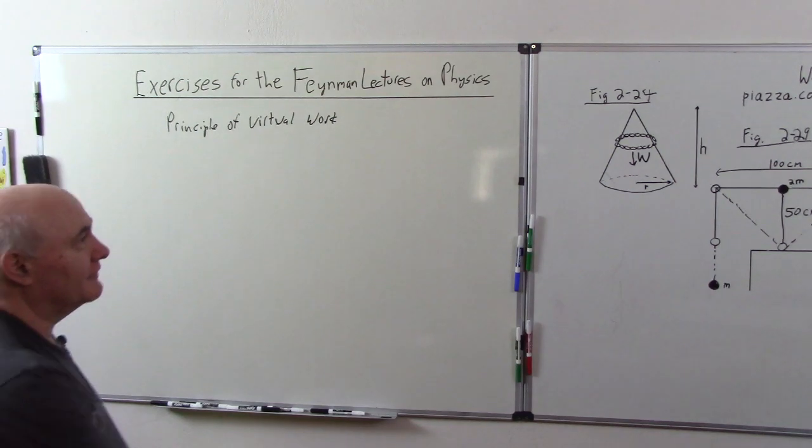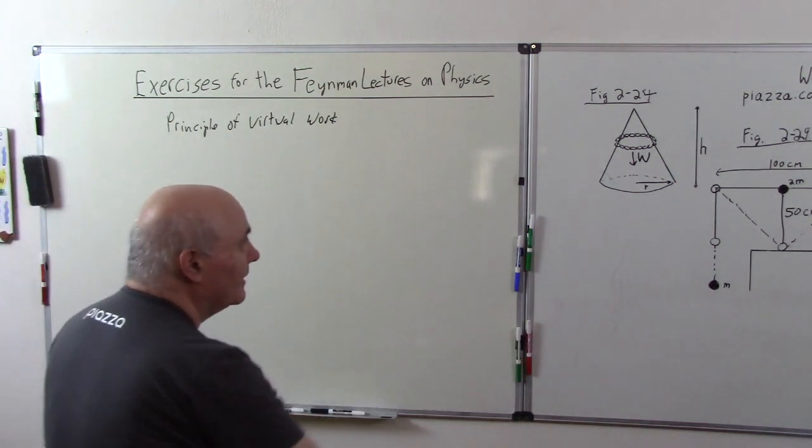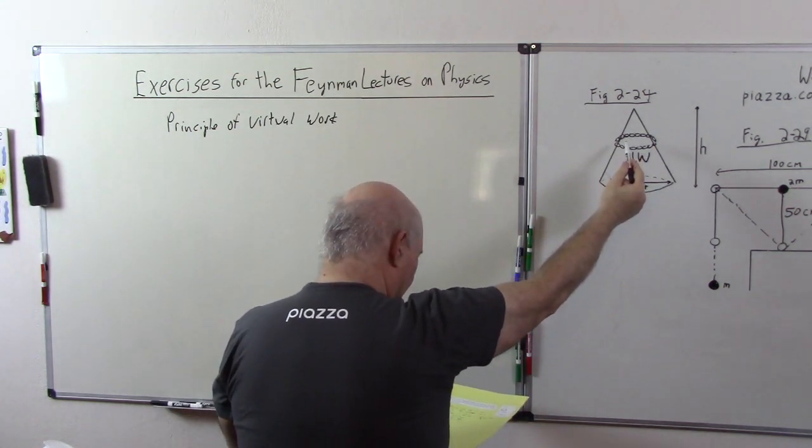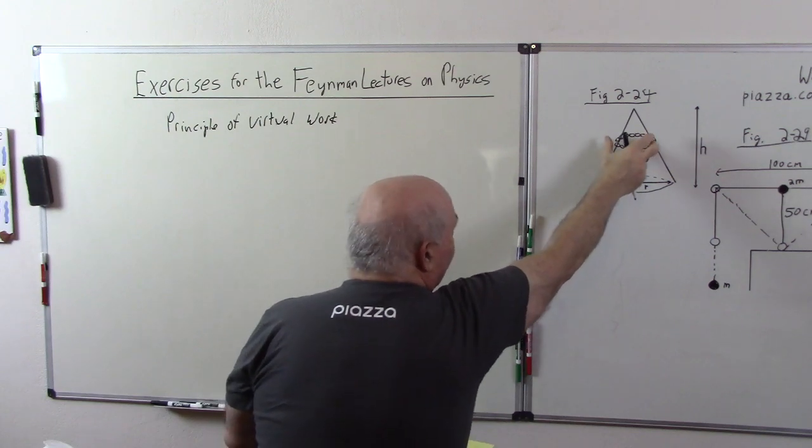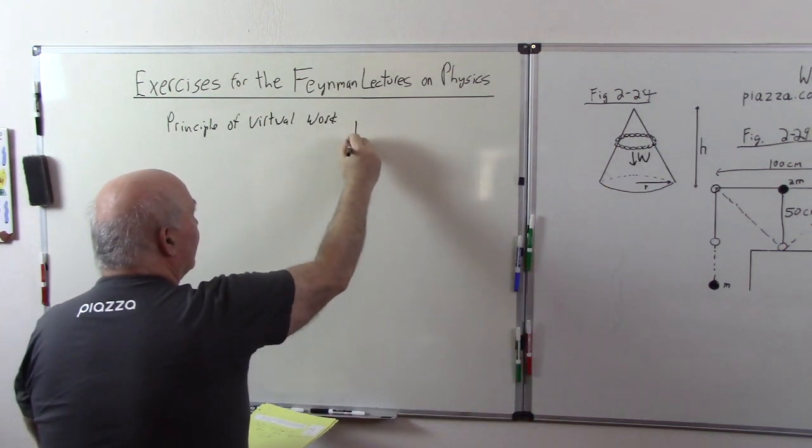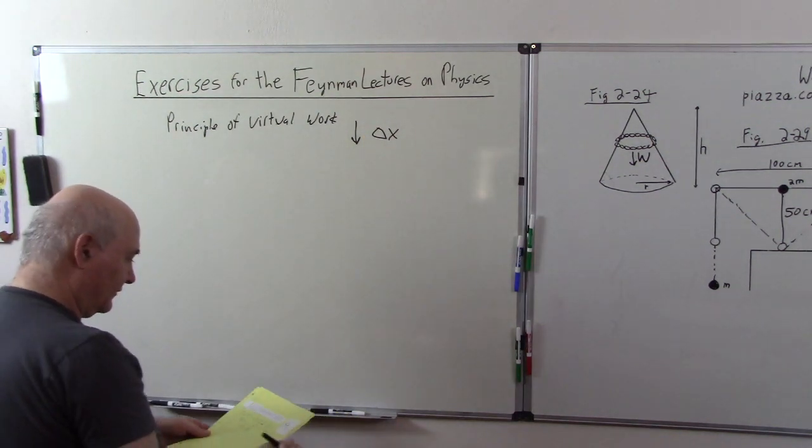So in this problem, if the chain were to lower, remember it says it's a flexible chain so you could imagine stretching it and it would go lower. If it were to go down by an amount del x, we know that first of all, the amount of work done...